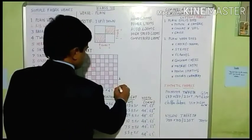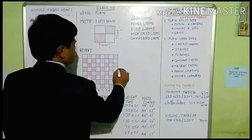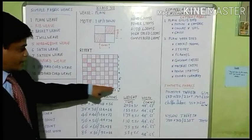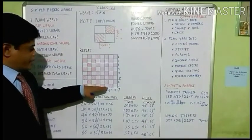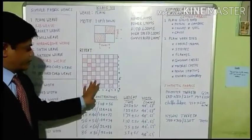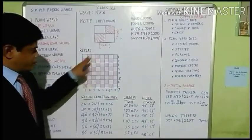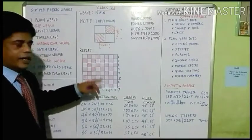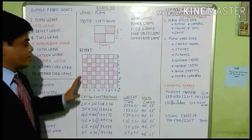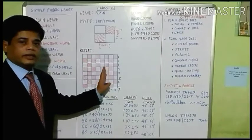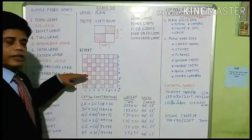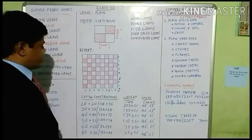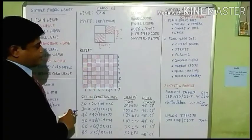Here also there are 8 picks — the yarns floating widthwise, which are called picks. In this geometrical picture there are 8 vertical lines and 8 horizontal lines. These 8 vertical lines are the warp ends and the horizontal yarns are the weft yarns. All are interlaced with each other, forming this plane geometry — this plane weave.